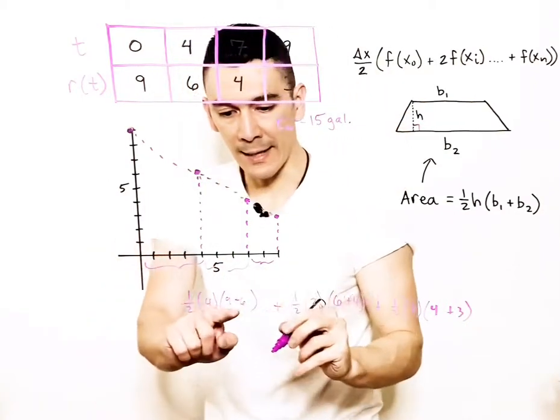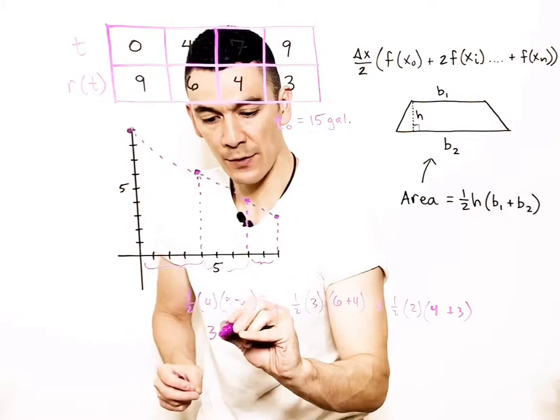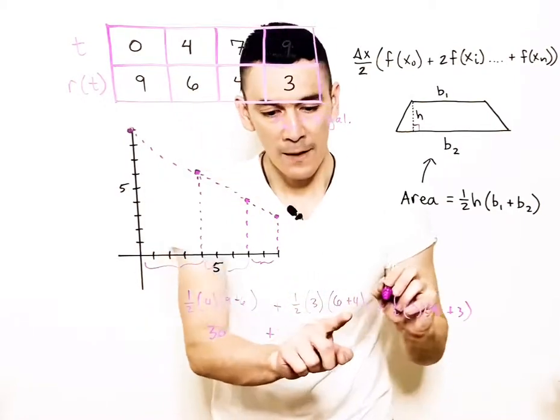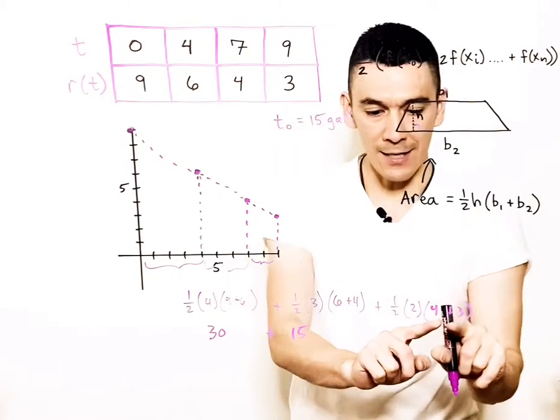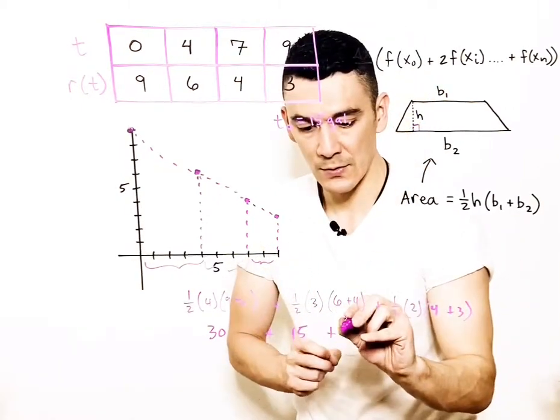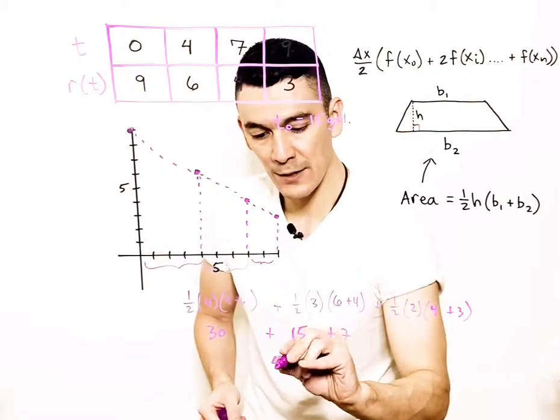So we're looking at, what would this be? 15 times 2 is 30, plus 30, half of 30 is 15. Then 7 is just 7. Add these up, that gives you 52.